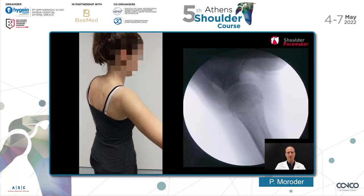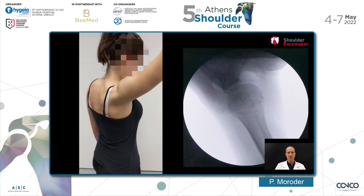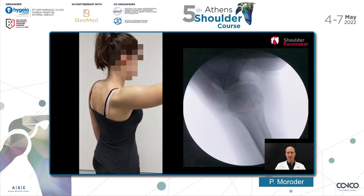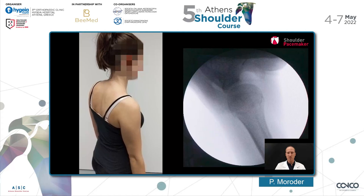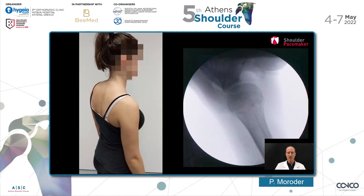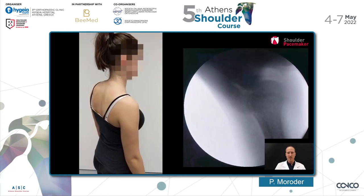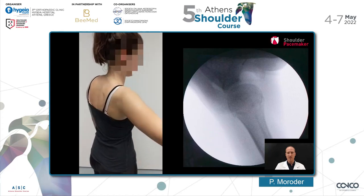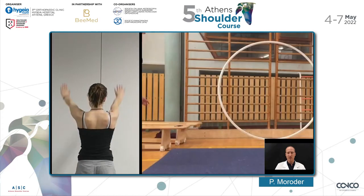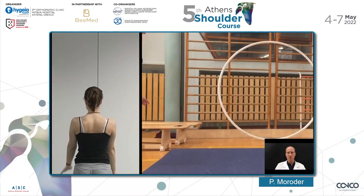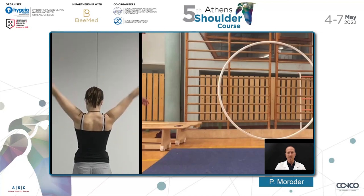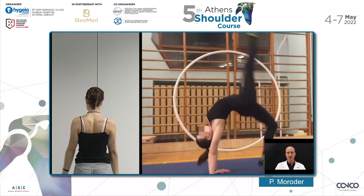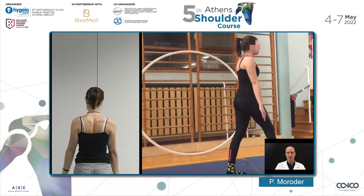Here you see some more examples of a patient with functional posterior shoulder instability — she was a circus artist, so obviously she could not continue with her profession. What you can see is the one-week result after the first training sessions. You can see how she can move her arms very nicely, and she now has a stable shoulder joint that allows her to perform her profession again.